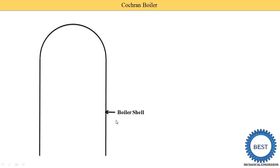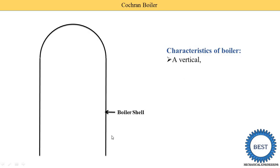For the Cochrane Boiler, or any boiler, the main component first is the boiler shell — that is the outer part. This boiler shell is vertical, so one of the characteristics of the Cochrane Boiler is that it is a vertical boiler. The upper part is the hemispherical shell and the lower part is the cylindrical shell.